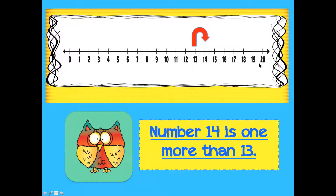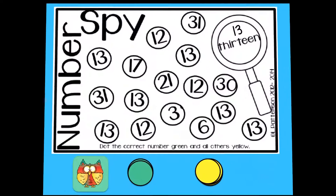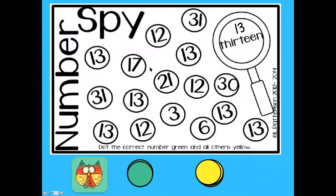We're moving up or to the right on the number line. Here's 13 — 14 is one more. And here again is our large 10-frame: 1, 2, 3, 4, 5, 6, 7, 8, 9, 10, 11, 12, 13, 14.